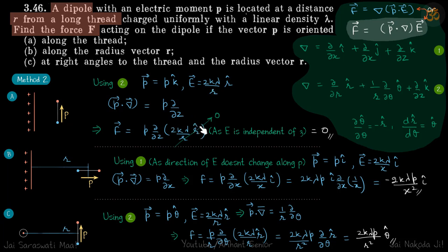And E vector we can see that it is independent of z. So as you go up and down along this line the E vector will not change. So everywhere it is radially outwards and its magnitude is also same. So d of E vector by dz is 0. That means the force on this dipole is 0.